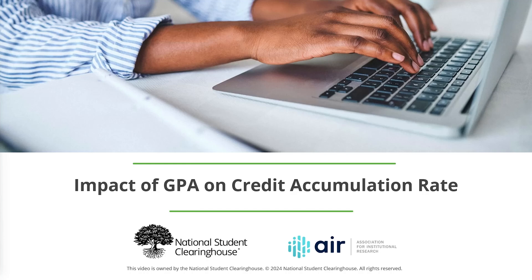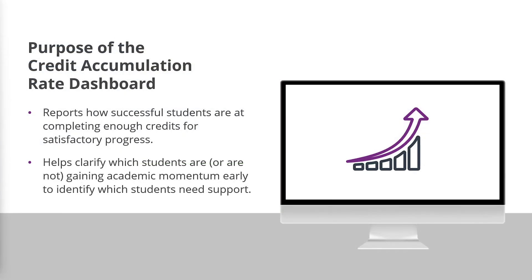In this tutorial, we demonstrate how to use the PDP Credit Accumulation Rate Dashboard to identify the relationship between GPA and credit accumulation rate. The Credit Accumulation Rate Institution Level Dashboard reports the number of students who have successfully completed enough credits for satisfactory academic progress. It also helps clarify which students are gaining academic momentum in their college career. Understanding which students are lagging in momentum will help determine which students need additional support.